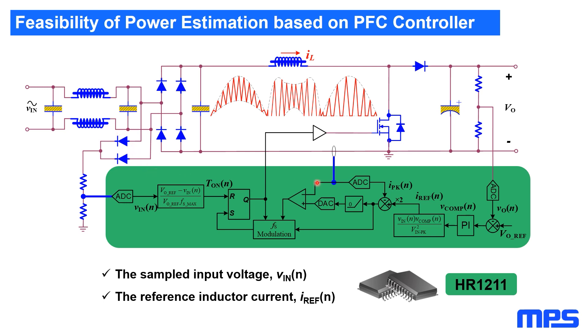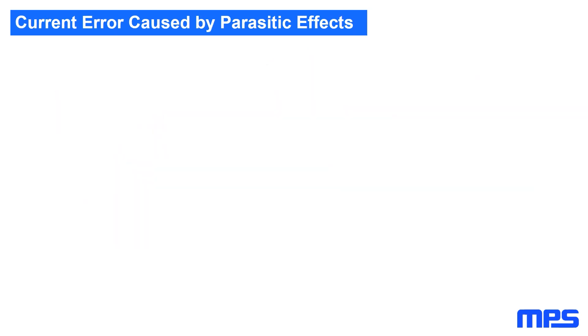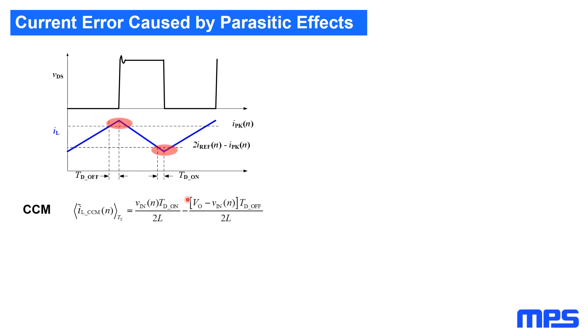The error in the current, on the other hand, is more complicated. Based on the analysis in this paper, the current error is mainly caused by some parasitic effects in the converter. In CCM conditions, the error is mainly caused by the turn-on and turn-off delays. These delays result in overshoot and undershoot in current control. So the error can be calculated based on the voltage second model of the inductor like this.